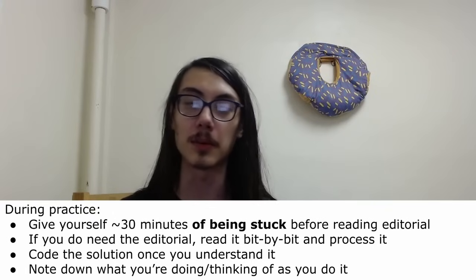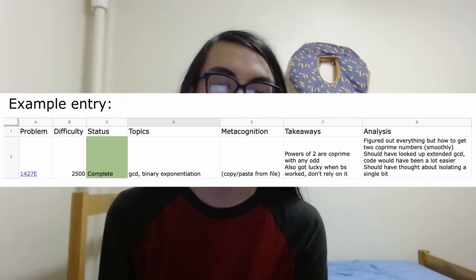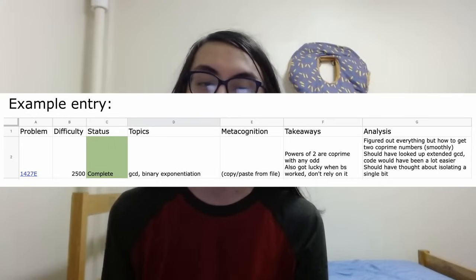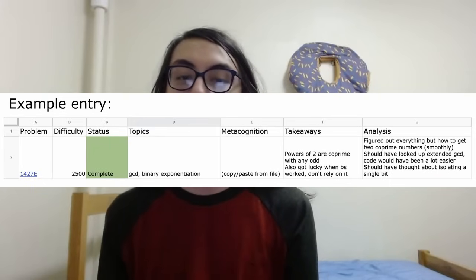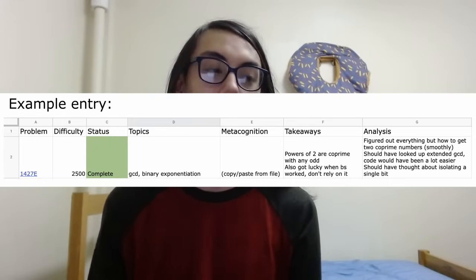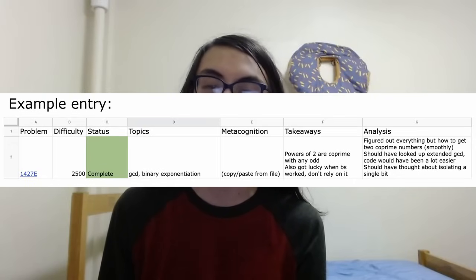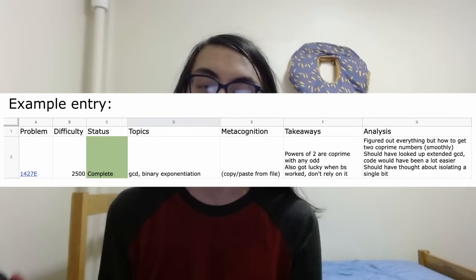Manually writing stuff out when practicing works too. Once you're done with a problem, you should reflect on it. I recommend keeping some sort of spreadsheet that stores information like the problem link and difficulty for easy reference, some sort of status on it, possibly a summary of the solution or topics involved, metacognition notes, some takeaways and things you learned, and an overall analysis of what went well and what went badly. That last part is super important, because you're really looking into your process of thinking and you'll probably be able to improve it.